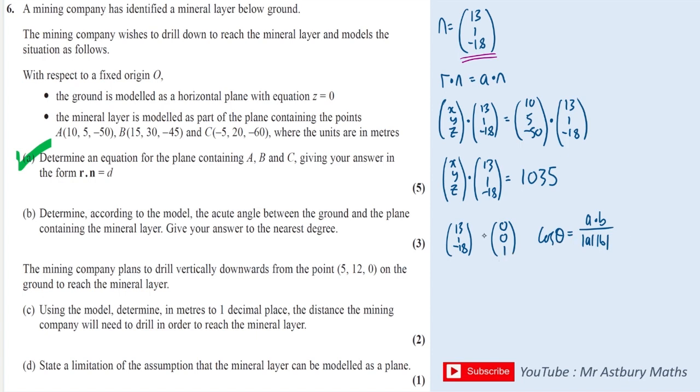So let's first dot them. So I can write cos theta is equal to those two dotted together, which is going to give me (0, 0, -18). And over the modulus of both of them times together. So the modulus of the first one is going to be 13 squared plus 1 squared plus 18 squared. And the modulus of the second one is just going to be the square root of 1, which is just 1.